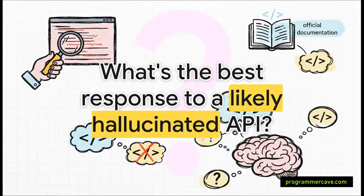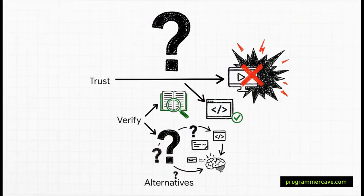So let's put that new mindset to the test. Right now, imagine an AI suggests a brand new API method you've never seen before. What is your immediate gut reaction next step? Do you just trust it, pop it in the code, and figure you'll fix any bugs later? Do you stop what you're doing and check the official documentation first? Or do you just ask the AI for a few more options and kind of hope one of them works?